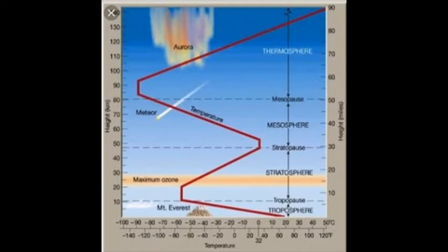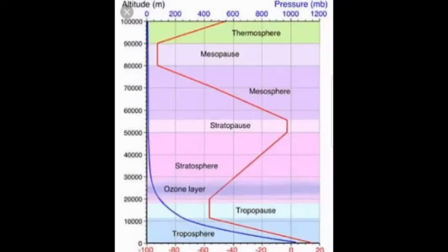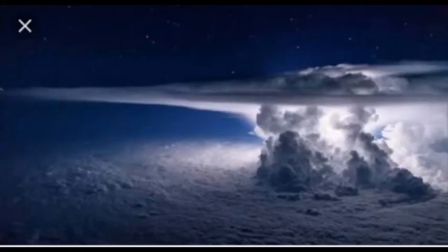We cannot reach the center of the Earth because as you go deeper and deeper, it becomes hotter and hotter. In the lower layers of the troposphere, temperatures range from 20 degrees Celsius to 15 degrees Celsius, except in the polar regions. Near the top of the troposphere it gets as cold as minus 75 degrees Celsius, so water vapor condenses and forms clouds.